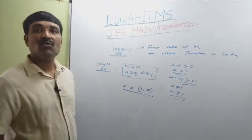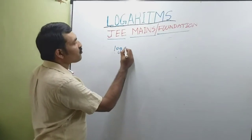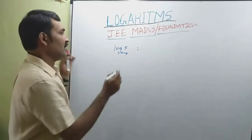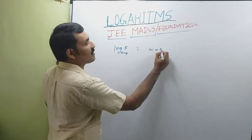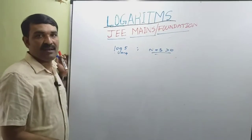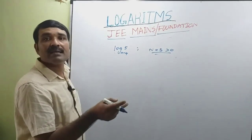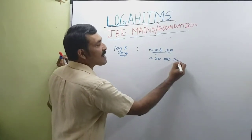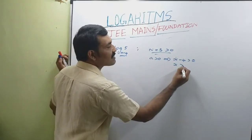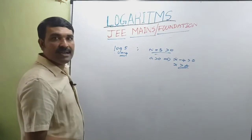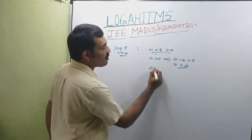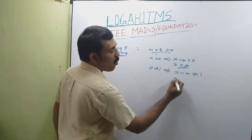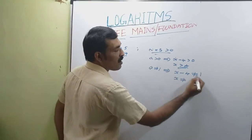Now the question: log of 5 to the base (x - 4). Find the value of x for which the function is defined. Here n = 5, which is greater than 0 — first condition satisfied. For the second condition, the base (x - 4) > 0, so x > 4. Third condition: base ≠ 1, so x - 4 ≠ 1.